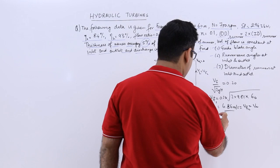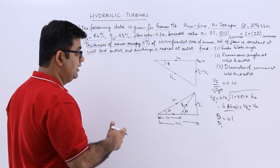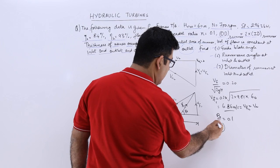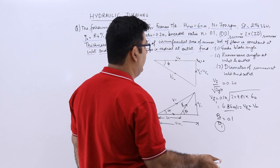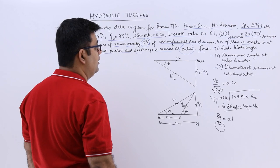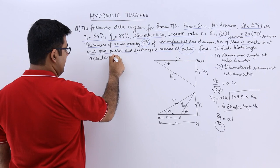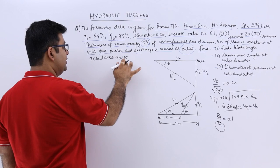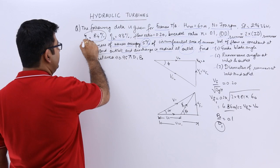The breadth ratio is B1 upon D1, equal to 0.1, where B is the width and D is the inlet diameter. D1 is taken as OD (inlet) and D2 as ID (outlet). Vane thickness occupies 5% of circumferential area, so the actual flow area is 0.95 × π × D1 × B1.